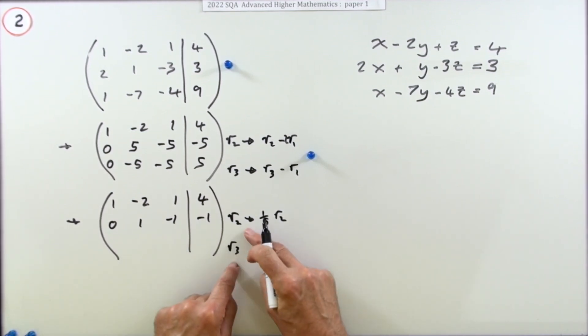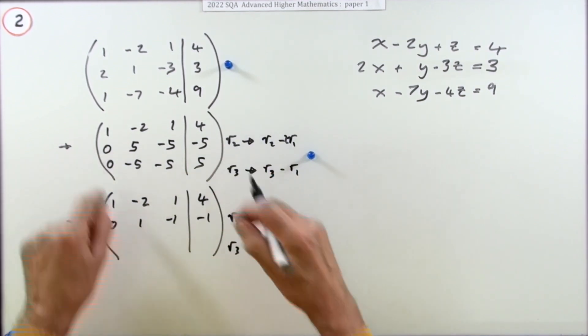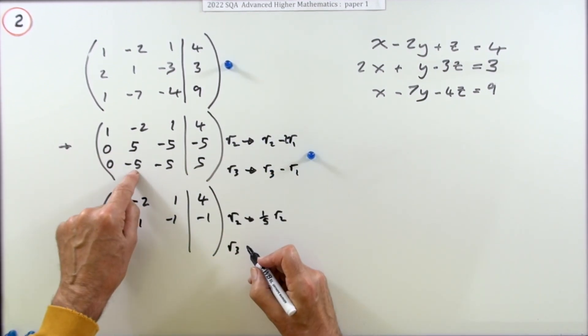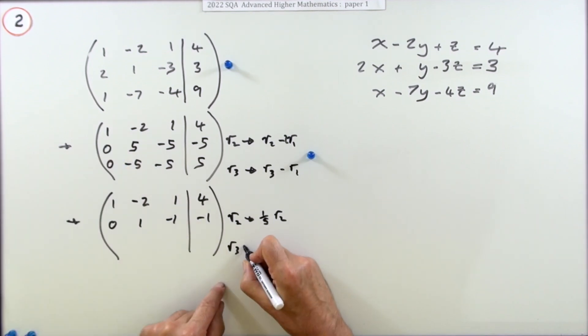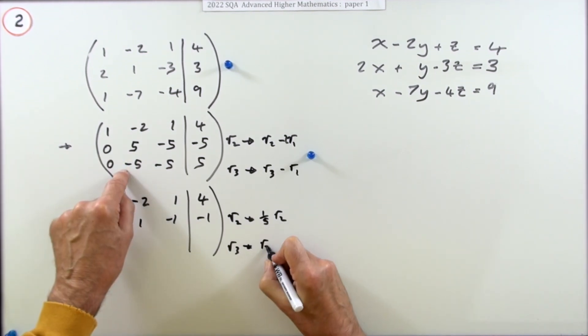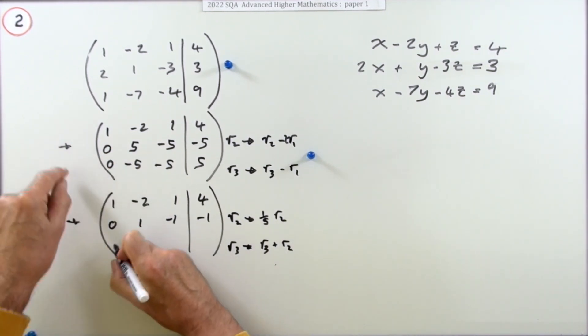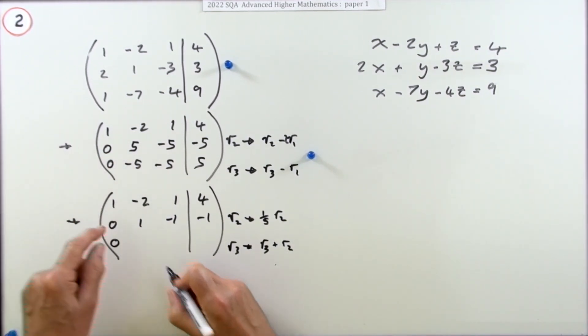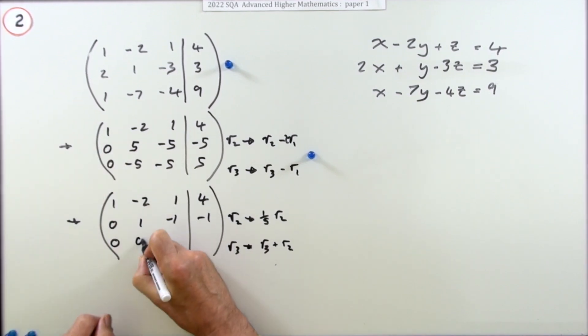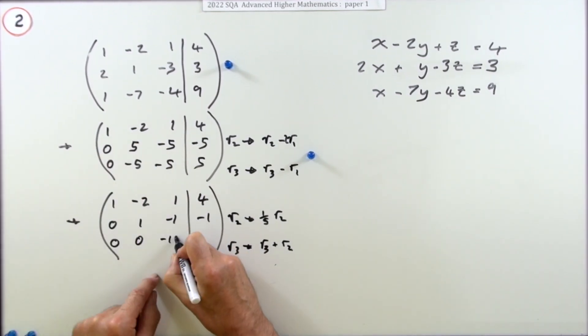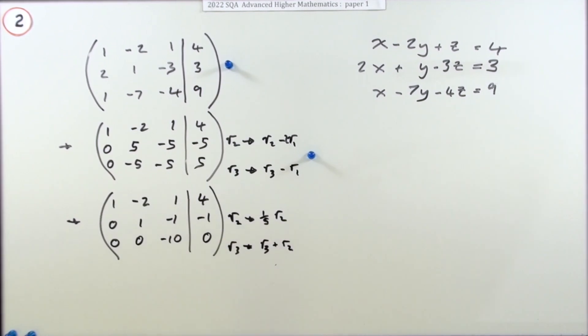Now this doesn't affect what I'm going to write here because these don't refer to these particular entries; these refer to what you had. So how can I get that to be zero? Easy, just add them. So row three I'll replace with row three add on row two.